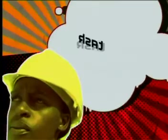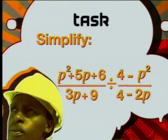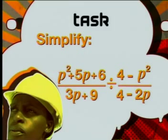So we've had some good practice at simplifying fractions. Now try this one on your own. Simplify P squared plus 5P plus 6, all divided by 3P plus 9, divided by 4 minus P squared, all divided by 4 minus 2P. That's all for this lesson. We have learned how to divide fractions. Remember, division is the inverse operation of multiplication, so instead of dividing we multiply by the reciprocal.